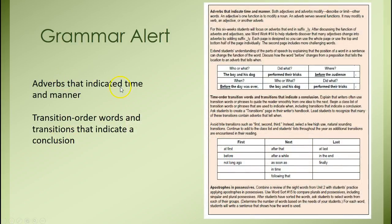The rest covers adverbs that indicate time and manner — your word study gives you what to do with kids and how to teach that. Also transition order words and transitions that indicate a conclusion, like really securing that they understand what that means. First, next, and last should be a skill they've had since first grade — we're just toning in and perfecting it. Then apostrophes and possessives, so look at those grammar alerts for this six weeks.